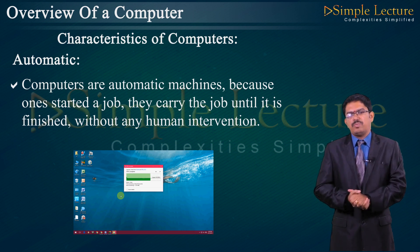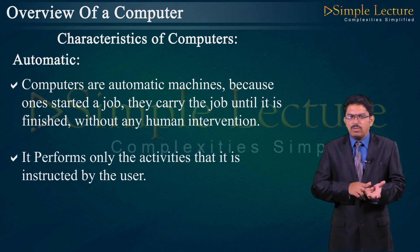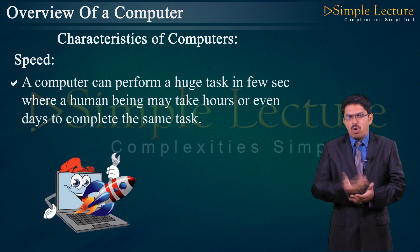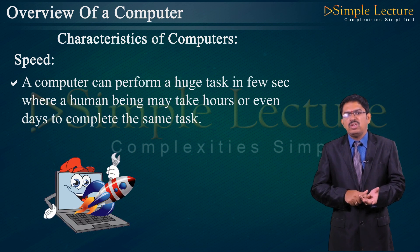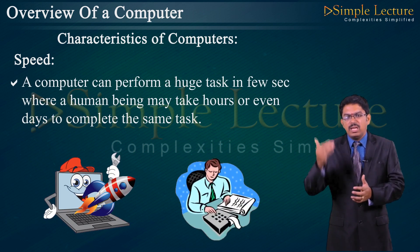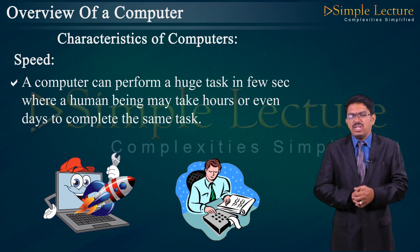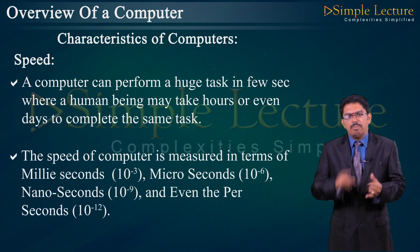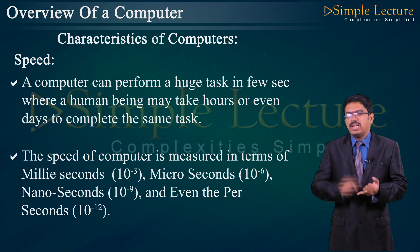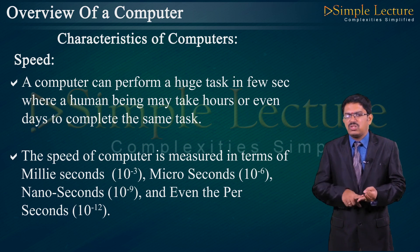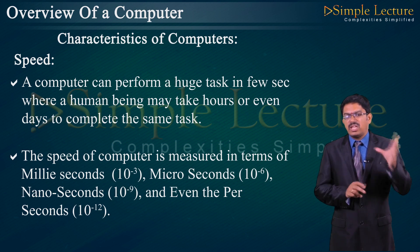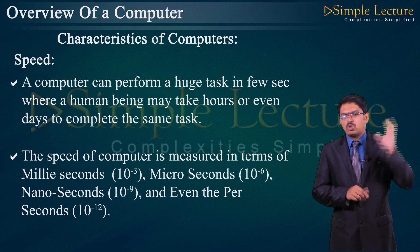It performs only the activities instructed by the user. Speed: a computer can perform a huge task in a few seconds where a human being may take hours or even days to complete the same task. The speed of a computer is measured in milliseconds (10⁻³), microseconds (10⁻⁶), nanoseconds (10⁻⁹), and picoseconds (10⁻¹²).